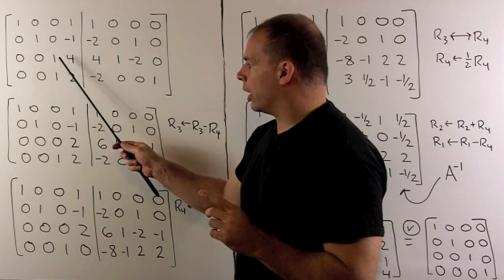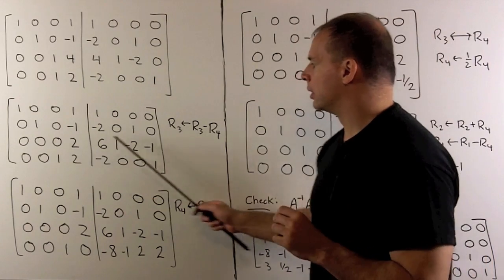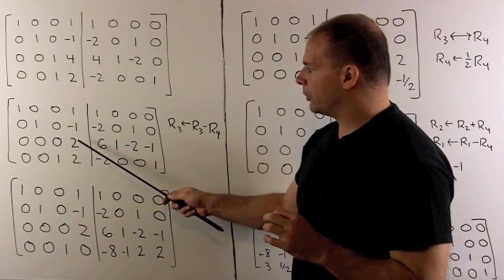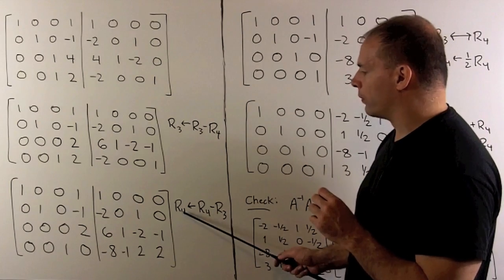So we'll eliminate this one. I'm going to send row three minus row four to row three. Then I'll use the two to eliminate this two here, so we're going to send row four minus row three to row four.